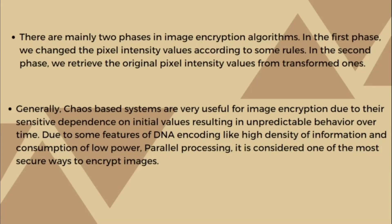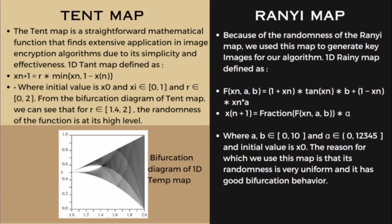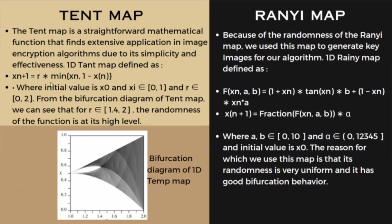Now let's see what type of chaotic functions are used in this technique. Here is the function of tent map. R is in the range of 0 to 2. But according to tent map's bifurcation diagram, if we select R in the range of 1.4 to 2, we get high randomness in the values of the function. The other initial value is x0. According to x0 and R, tent map produces random values of xn.